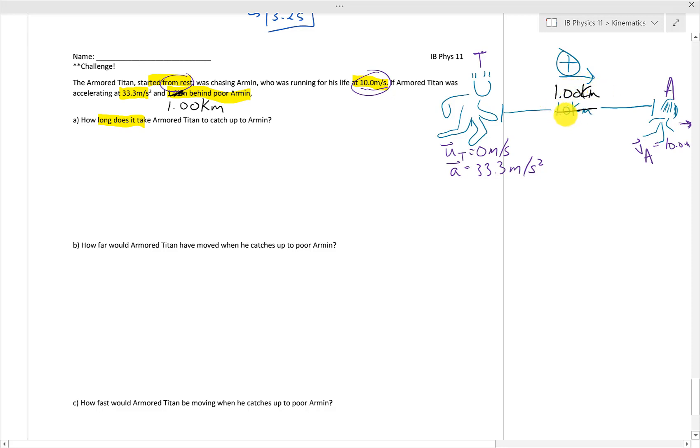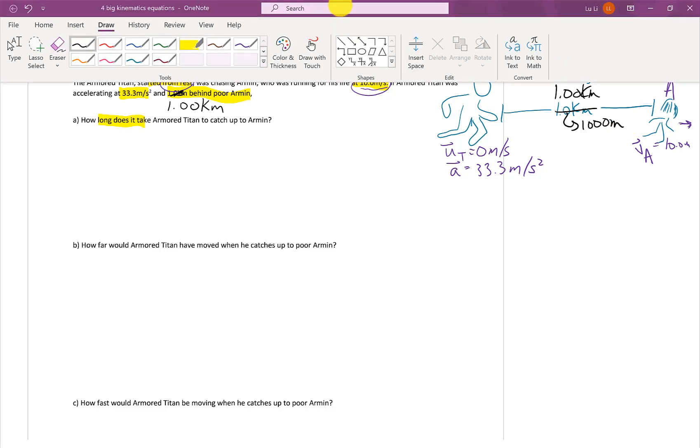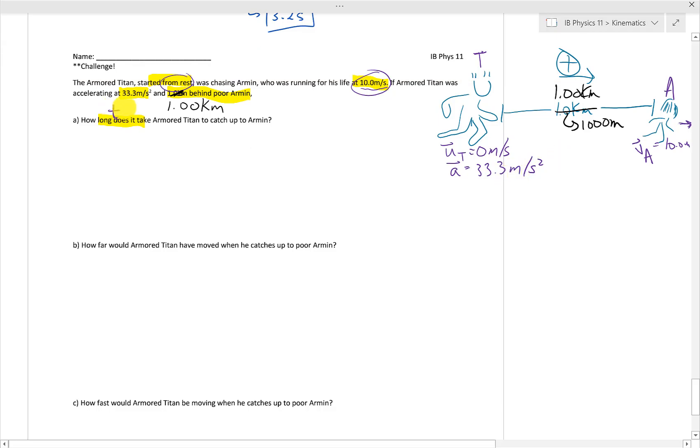We also know that the Armored Titan is accelerating at 33.3 meters per second squared, and they have a distance of separation of 1.0 kilometers. And actually, what I'm going to do here is I'm going to change the sig figs of this 1.0. I'm going to change it to 1.00 kilometers, which gives us another sig fig. And no, you can't do this in the question, only I can. I'm just kidding. So that we know is 1,000 meters.